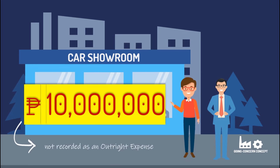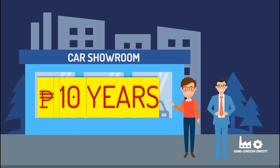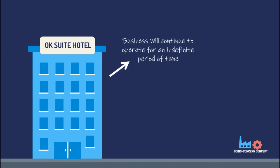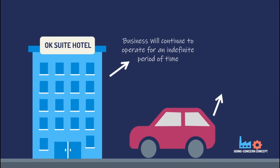Rather, we should allocate its cost over 10 years — the life of the car. Why? Because with the continuity concept, we are assuming that the business will continue to operate for an indefinite period of time. Therefore, it is right to allocate the cost of the vehicle over the period of its useful life.